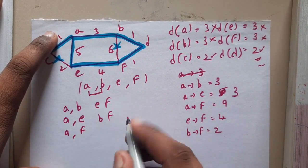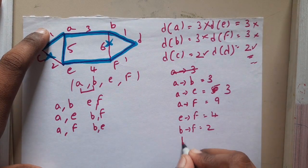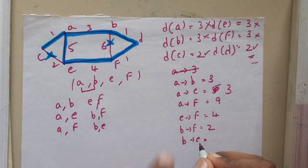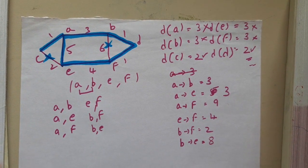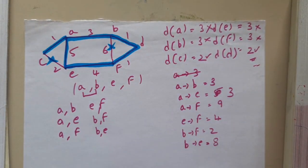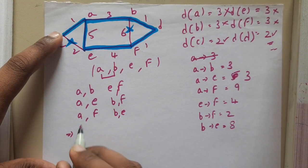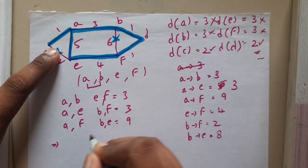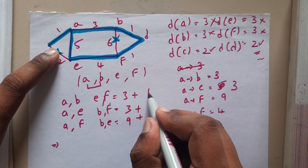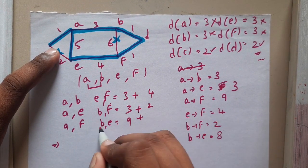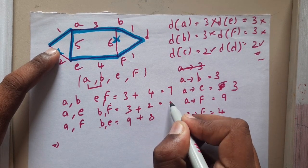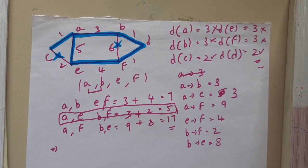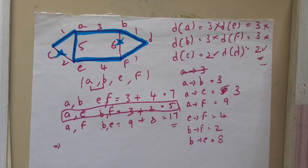Now sum up the pairing costs: pairing A-B with E-F gives 3+4=7; pairing A-E with B-F gives 3+2=5; pairing A-F with B-E gives 9+8=17. The minimum total is 5 from the A-E and B-F pairing. So select A-E and B-F as the optimal pairing.